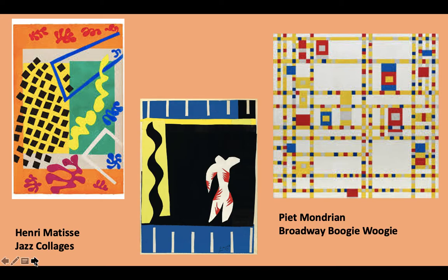In the painting on the right, with all the little red, yellow, and blue squares, this is called Broadway Boogie Woogie. It's by a Dutch artist named Piet Mondrian. He made this painting after he moved to New York City in the 1950s, and it was based on a type of jazz music played on the piano. All of the cars, subways, and movement in New York reminded him of that music.